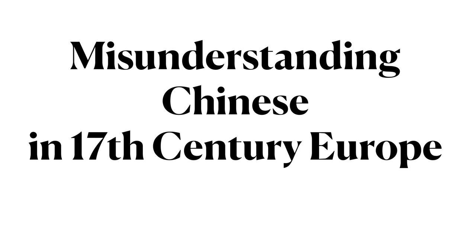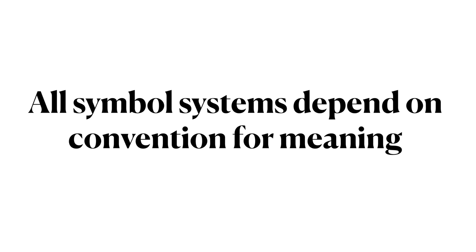This misunderstanding is alluded to in Chapter 2 of our textbook, Language, Technology, and Society. Intellectuals in 17th century Europe failed to recognize that all symbol systems, including the Chinese writing system, depend on convention for meaning.